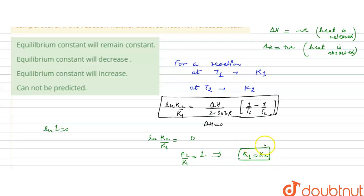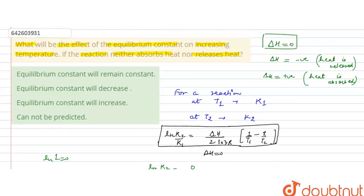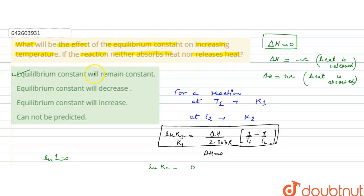Since K2/K1 equals 1, it means K1 equals K2 — that is, the equilibrium constant is not changing; it remains constant. So the correct answer is that the equilibrium constant will remain constant. It will neither increase nor decrease when ΔH is 0, that is when the reaction neither absorbs heat nor releases heat.